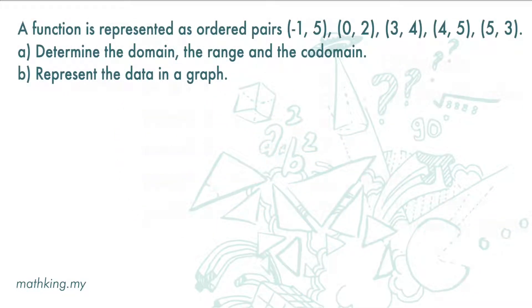A function is represented as ordered pairs: (-1, 5), (0, 2), (3, 4), (4, 5), (5, 3). Determine the domain, the range, and the codomain.